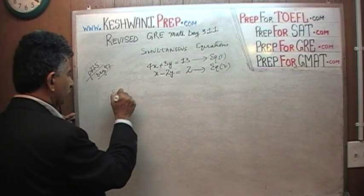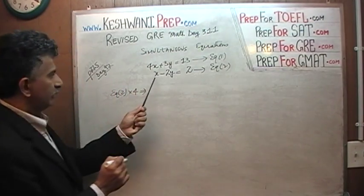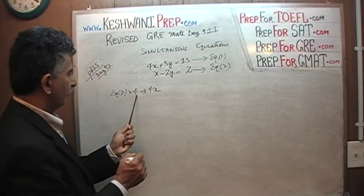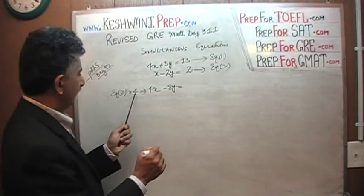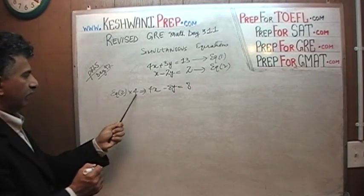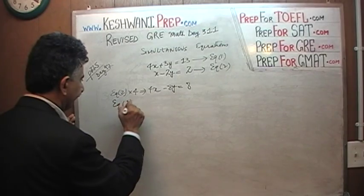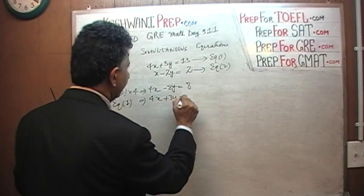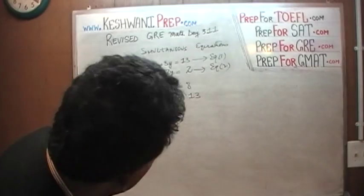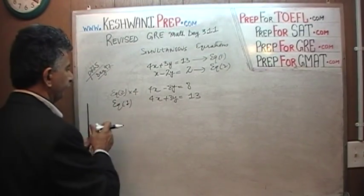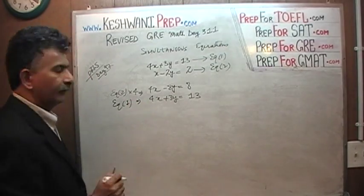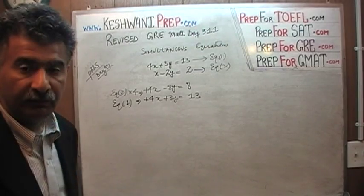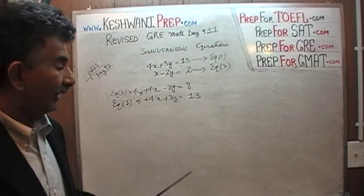Equation 2 times 4 gives us 4x, negative 2 times 4 is negative 8y, and 4 times 2 is 8. So equation 2 times 4 is: 4x minus 8y equals 8. And then equation 1 comes as it is: 4x plus 3y equals 13. Both x coefficients are positive, so we cannot add the two equations — we have to subtract the second equation from the first equation.